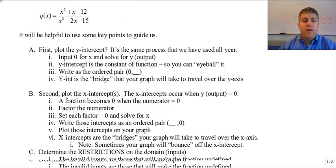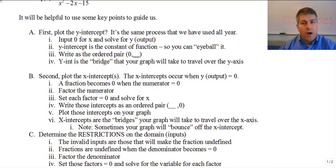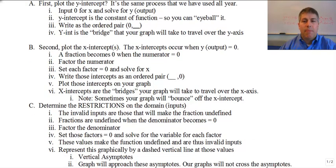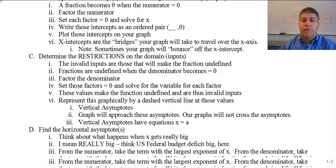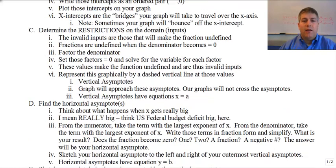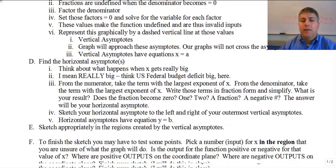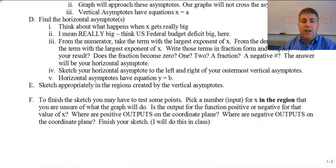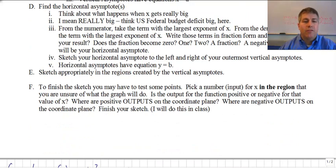As the notes say, we're going to plot the y-intercept — we know how to do that — then the x-intercepts, then find the restrictions on our domain which give us our vertical asymptotes, and then graph the horizontal asymptote. Then we'll sketch our graph. In today's example, we won't need to use test points, but that will come up later on.